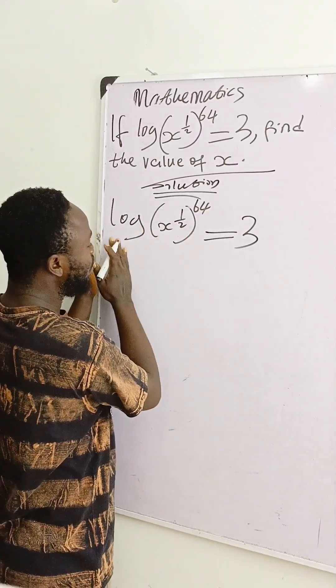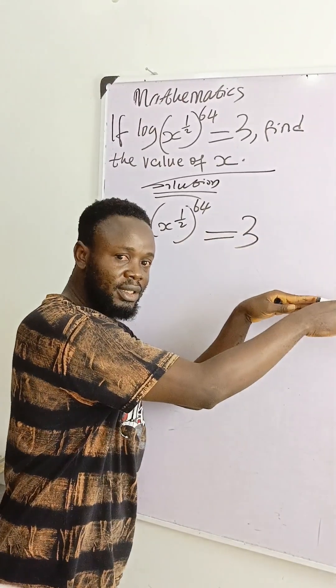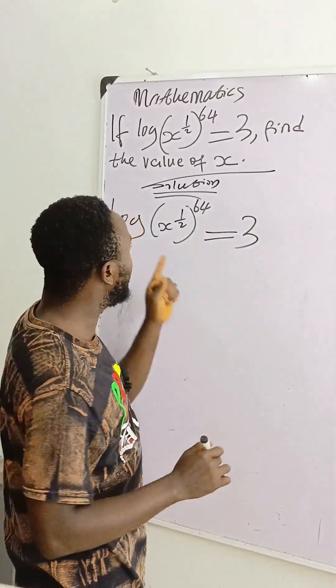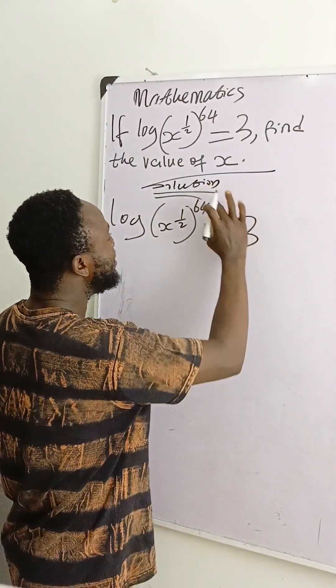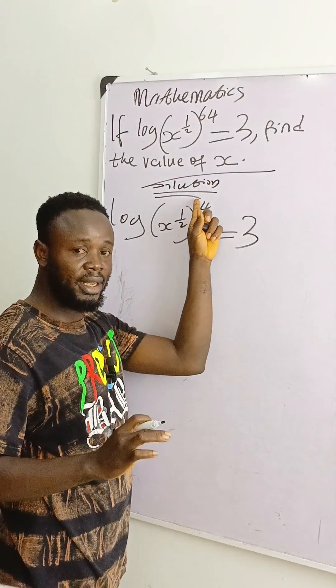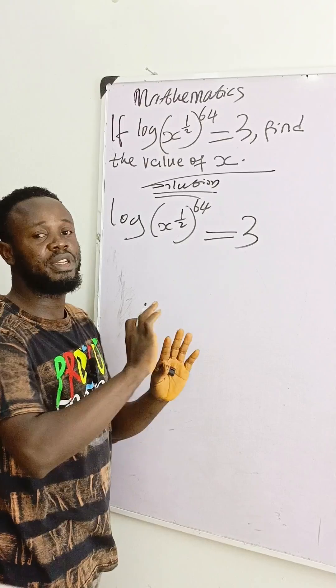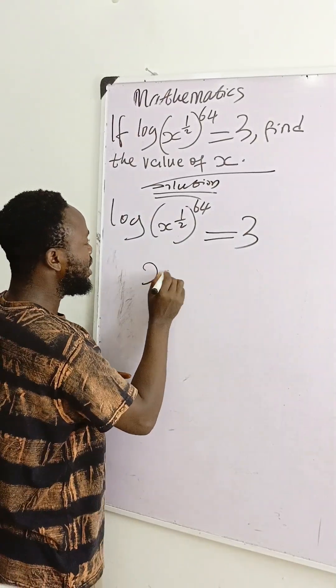When you have a log equation like this, once you want to remove the log, exchange these values. Therefore, where I have 64, I'll write 3. Where I have 3, I'll write 64, and the log will disappear. Look at what I mean: x raised to power 1/2...